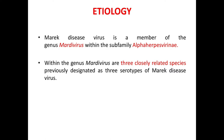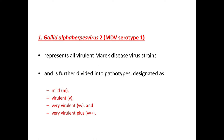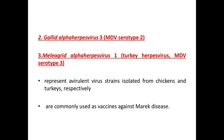The first is Gallid herpesvirus 2, that is MDV serotype 1. It represents all virulent Marek's disease virus strains and is further divided into pathotypes designated as mild virulent, virulent, very virulent, and very virulent plus. Next is Gallid herpesvirus 3, that is MDV serotype 2, and Meleagrid alphaherpesvirus 1, or HVT, or MDV serotype 3. These two represent avirulent strains isolated from chickens and turkeys respectively and are commonly used as vaccines against Marek's disease.